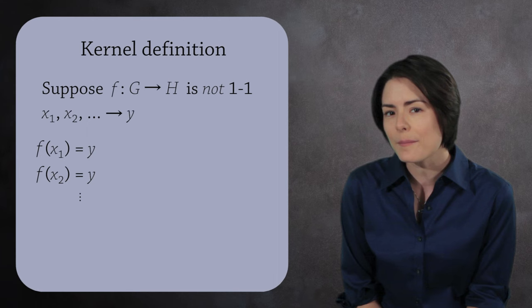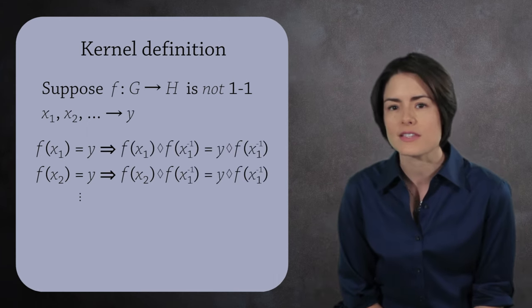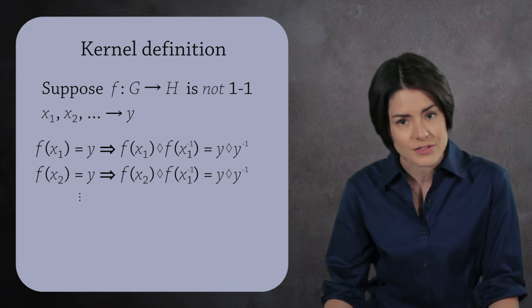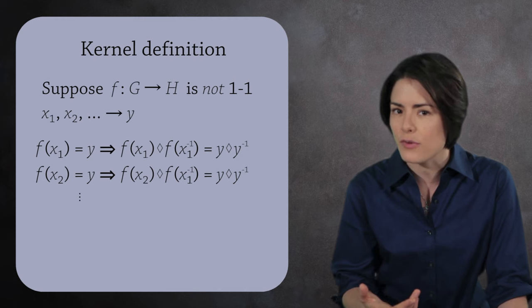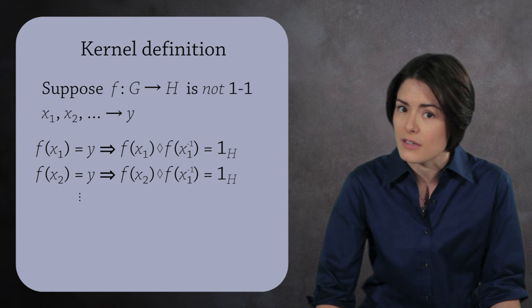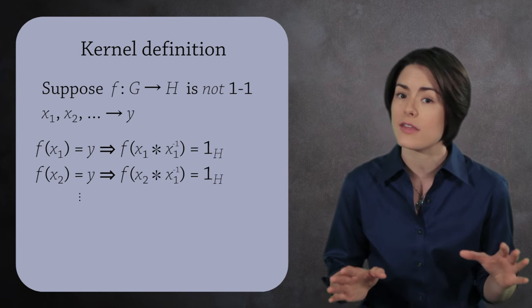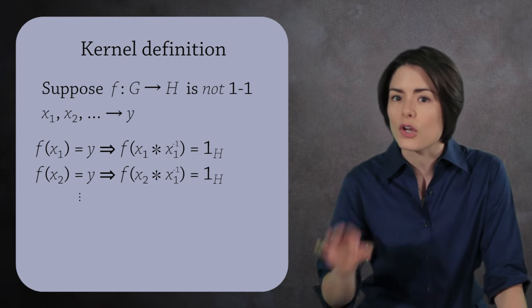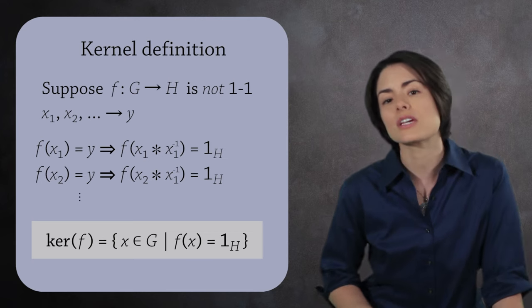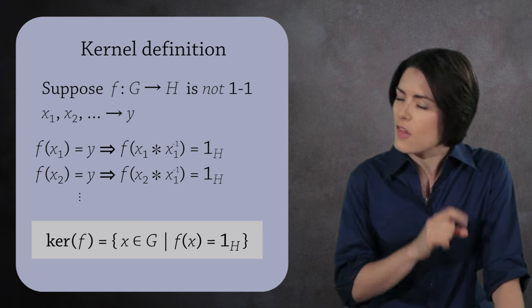Now watch what happens if we multiply all of these equalities by f of x1 inverse. Since homomorphisms send inverses to inverses, f of x1 inverse equals y inverse. This allows us to simplify the right hand sides. Next we can combine the left hand sides because f is a homomorphism. This shows that there are multiple elements in G which all map to the identity in H. These elements are called the kernel of f, and we write the kernel like this. This notation emphasizes that the kernel is a property of the homomorphism, not the groups.